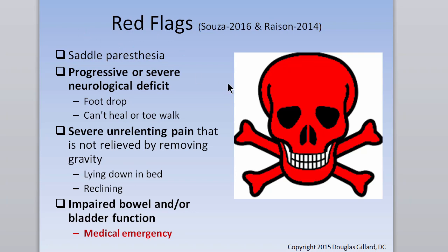Red flags: saddle paresthesia is a weak one, but progressive or severe neurological deficit is important — if a patient suddenly develops foot drop, can't heel-toe walk, or their pain is not relieved by removing gravity such as lying down, they need to go to the hospital. Regarding bowel or bladder symptoms — cauda equina — the more common finding is urinary retention, not incontinence. A neurogenic bladder becomes huge and the patient must be catheterized. These are definite red flags.